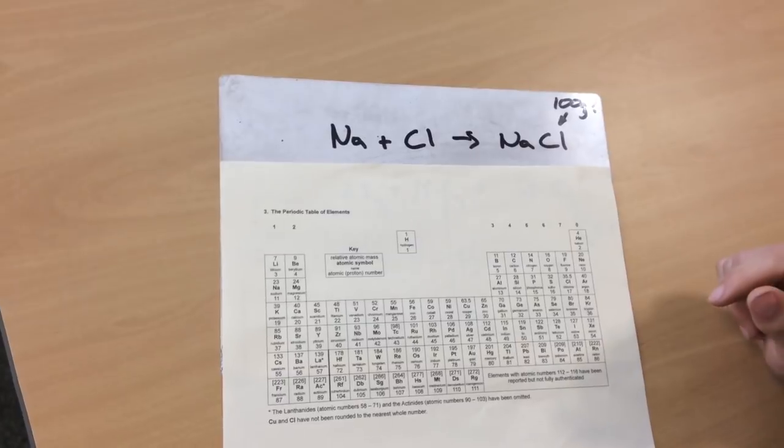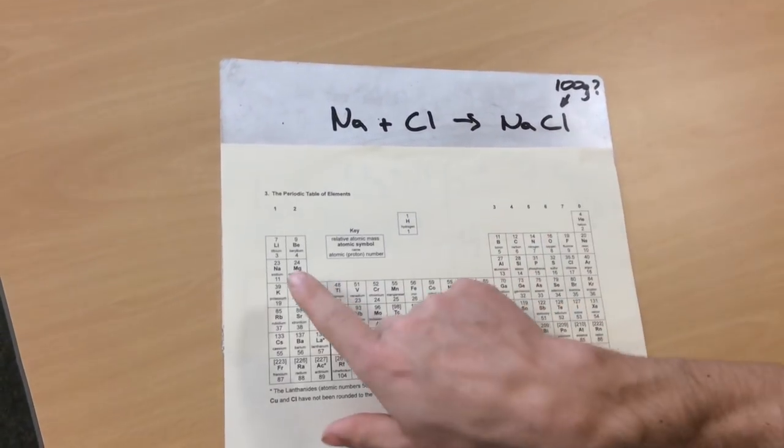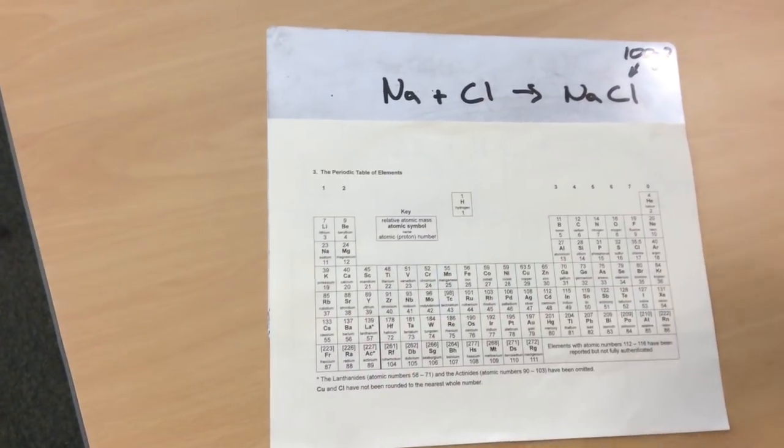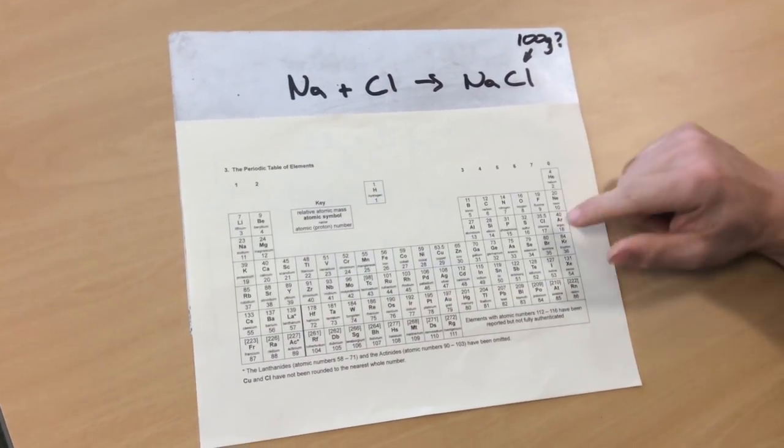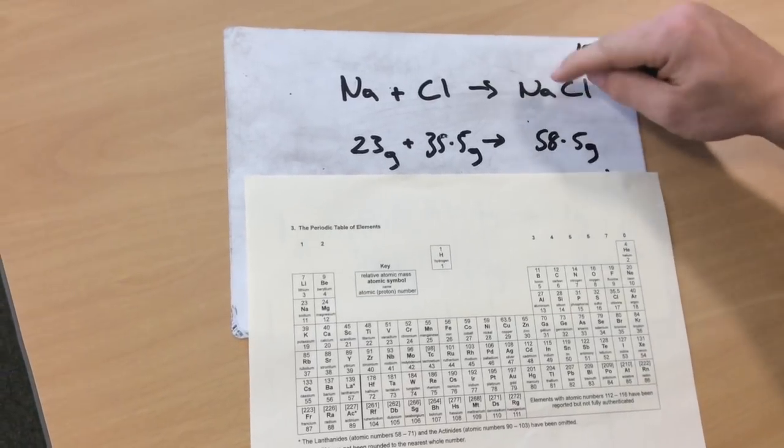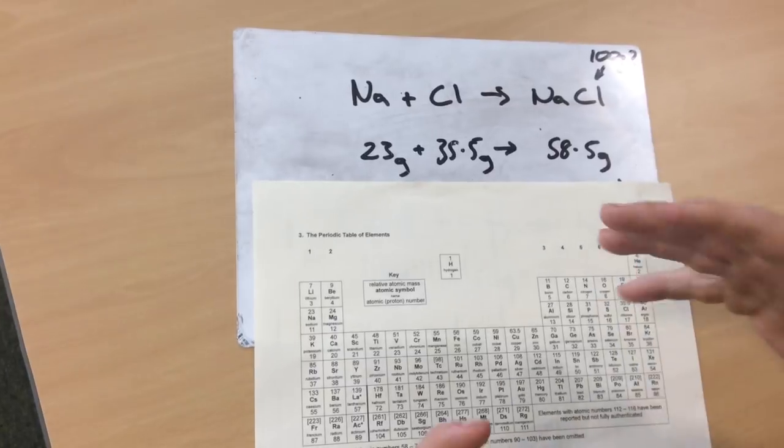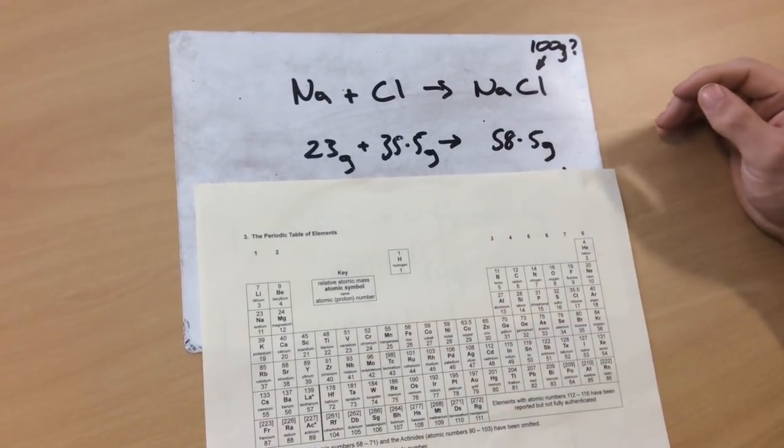So the first thing you do is you come to your periodic table and you look at the weight of your different elements. So if I'm to look at sodium, that weight's 23. And chlorine, well, that weight's 35.5. So I just put those underneath. And the relative formula mass for this one is 58.5 grams. So again, it's the same as the recipe before. I've got my basic ingredients.